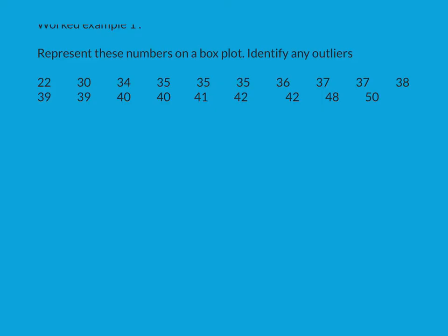For this example we're given some numbers, we have to do them on a box plot and identify any outliers. Let's just remind ourselves what a box plot looks like. Looks like this normally, where you've got your median, your lower quartile, your upper quartile, your minimum and your maximum, but we're also going to have potentially an outlier or two either end.